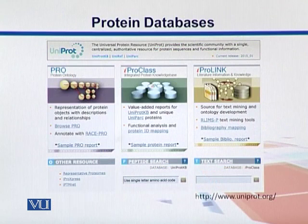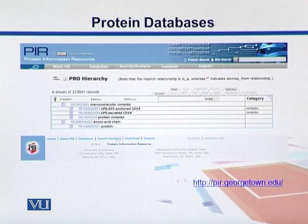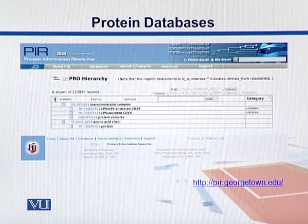Here is the UniProt page. As you can see, it has three main sections. We can have protein ontologies, labeled as PRO. Then we have the PRO class where we can find the sequences, and PRO link which tells us about the literature. Ontologies classify proteins on the basis of their functions, organized in different hierarchies — from a major function down towards more specific functions.